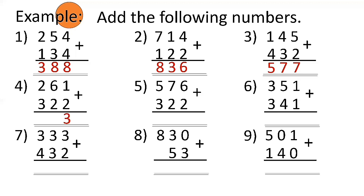1 plus 2 is 3, 6 plus 2 is 8, and 2 plus 3 is 5. So 261 plus 322 is 583. Number 5: 576 plus 322 — 6 plus 2 is 8, 7 plus 2 is 9, and 5 plus 3 is 8. So the answer is 898. Number 6: 351 plus 341 — 1 plus 1 is 2, 5 plus 4 is 9, and 3 plus 3 is 6. So the answer is 692.